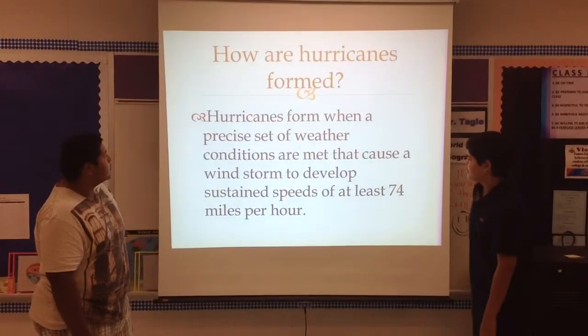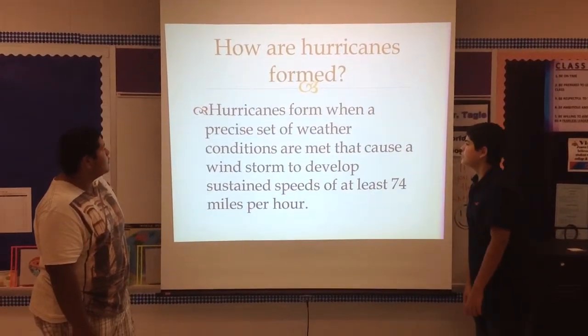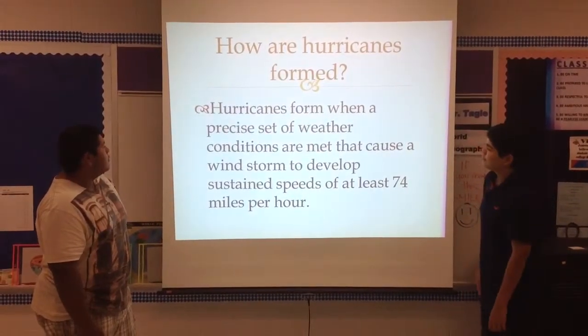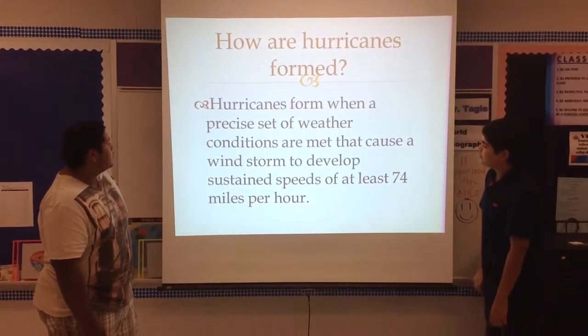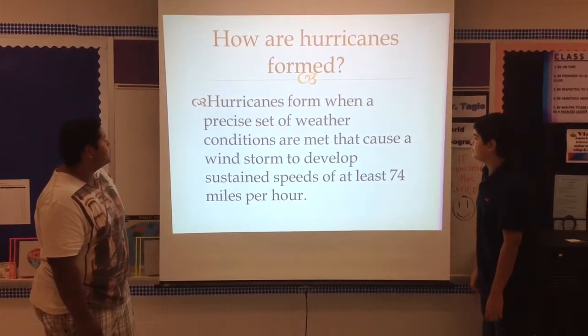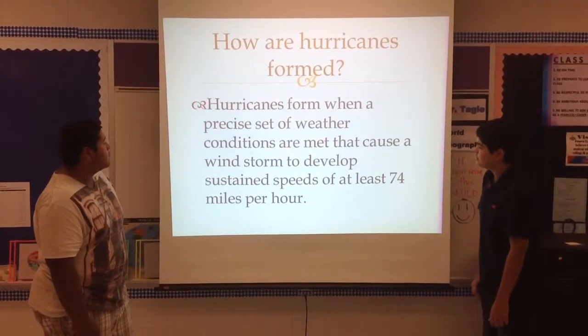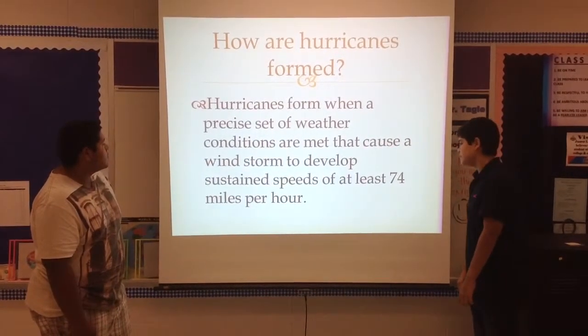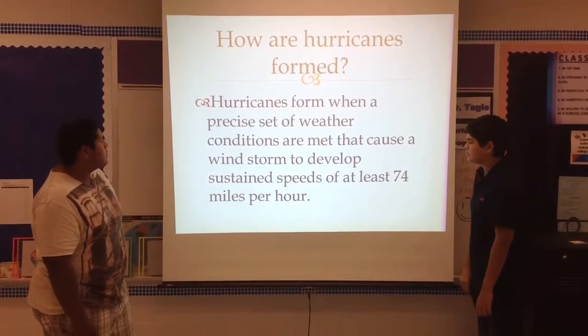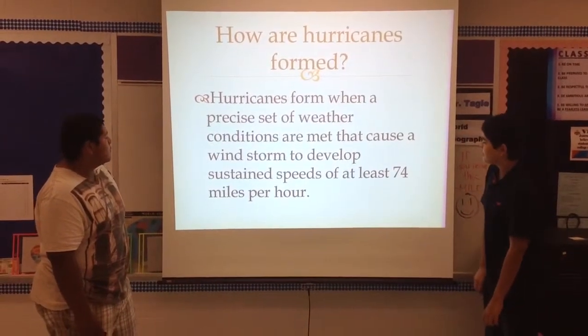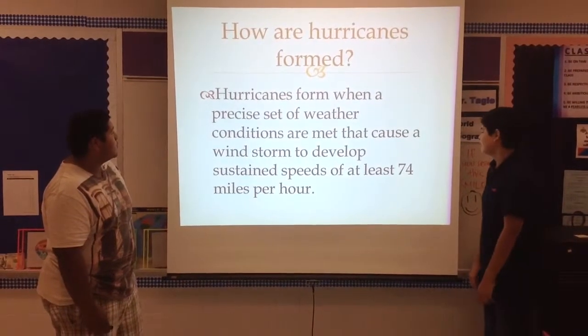How are hurricanes formed? Hurricanes form when a precise set of weather conditions are met that cause a windstorm to deliver substantial speeds of at least 74 miles per hour.